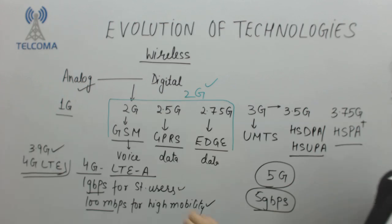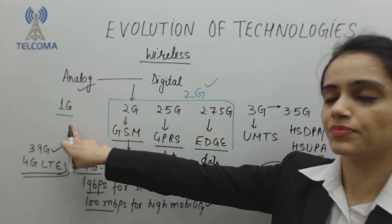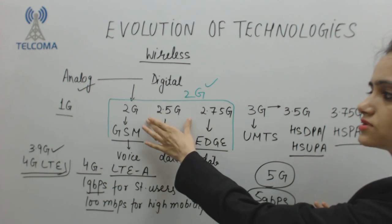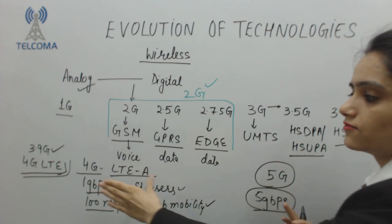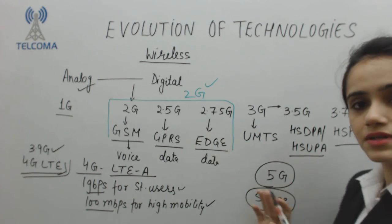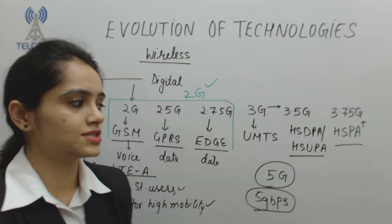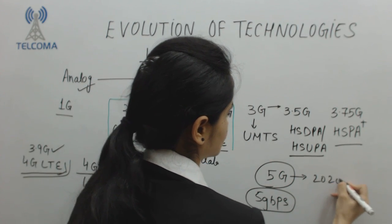We started from the first generation, we are currently using 2G, 3G and 4G, and we have set up a target for the 5th generation which could be commercial in the 2020s.